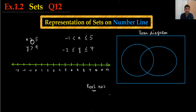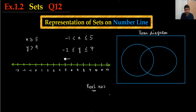So first, X is greater than or equal to 5 — be careful, there is 'greater than 5' and 'greater than or equal to 5.' When talking about greater than or equal to 5, I will draw a little circle and fill the circle, then draw an arrow to the right. So this is all the numbers greater than 5, including 5. This is the first part.